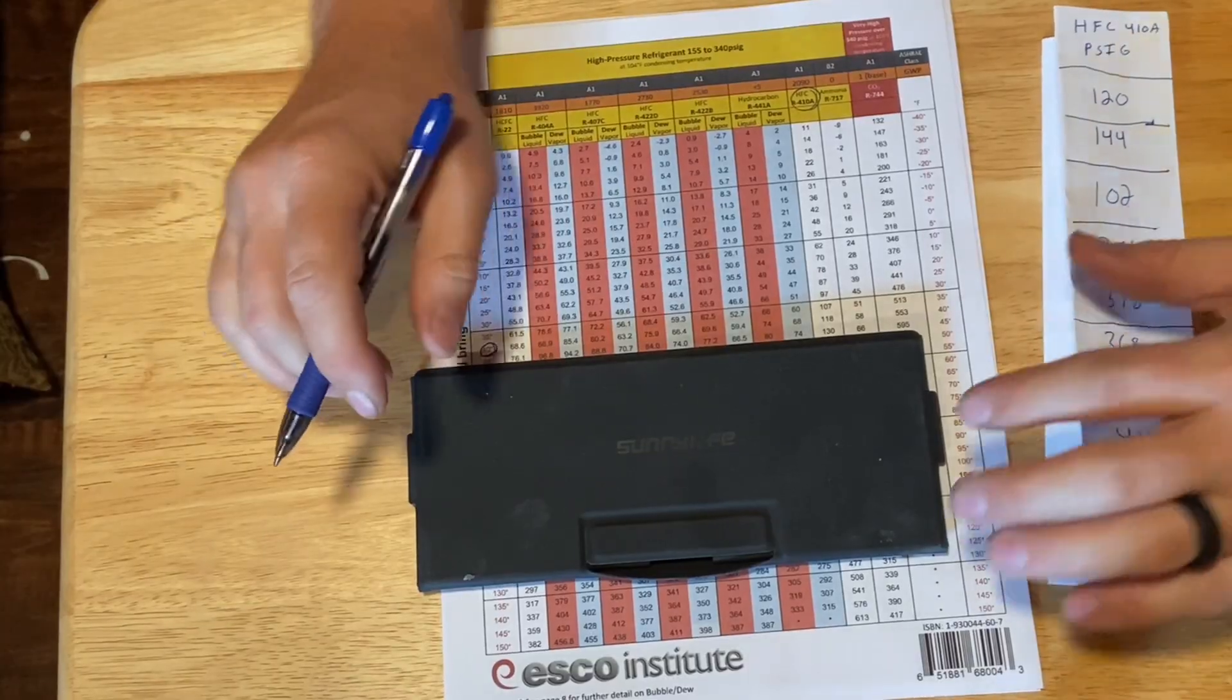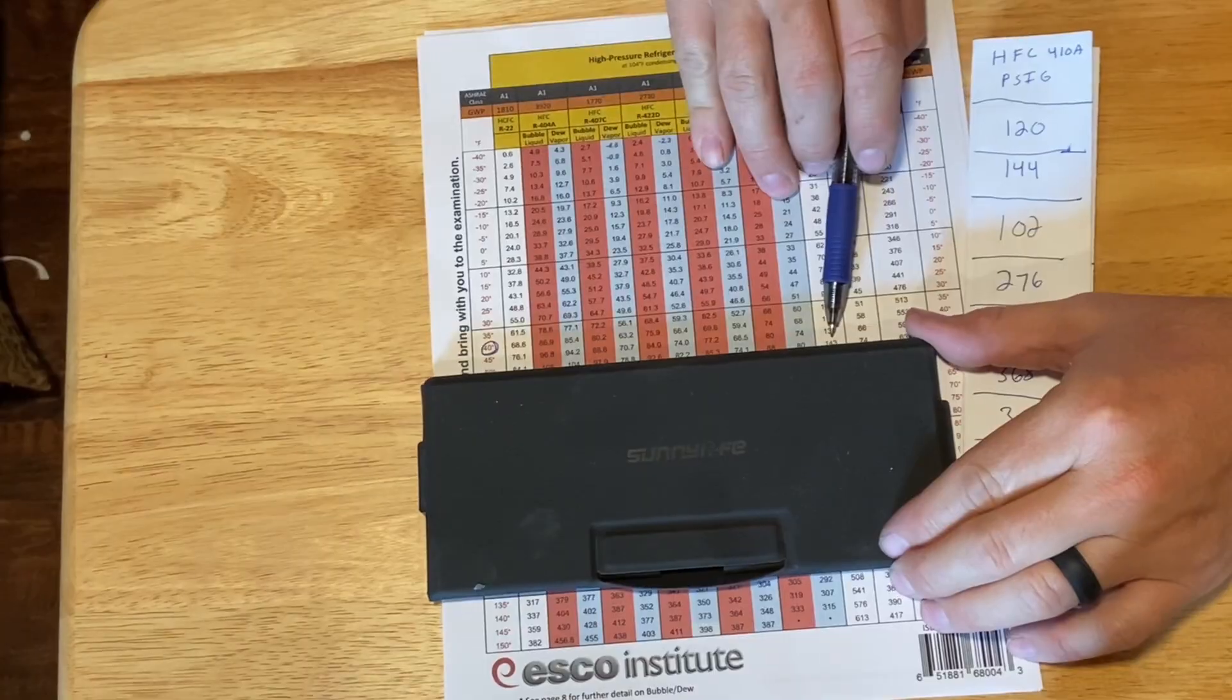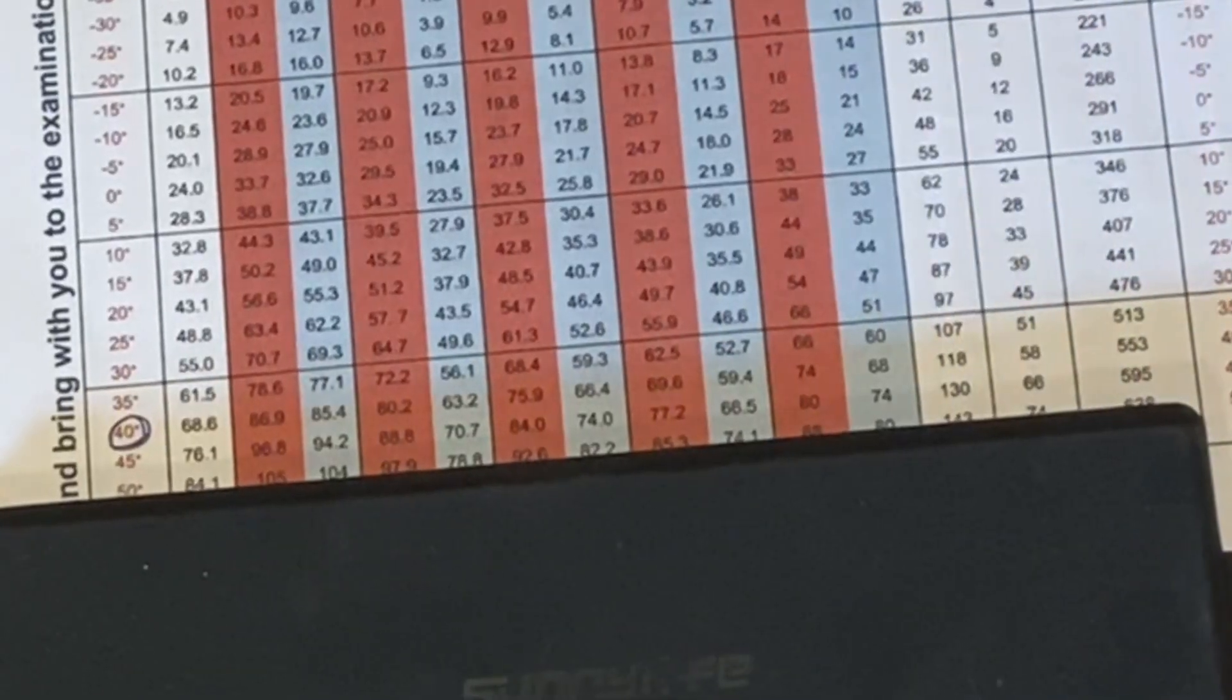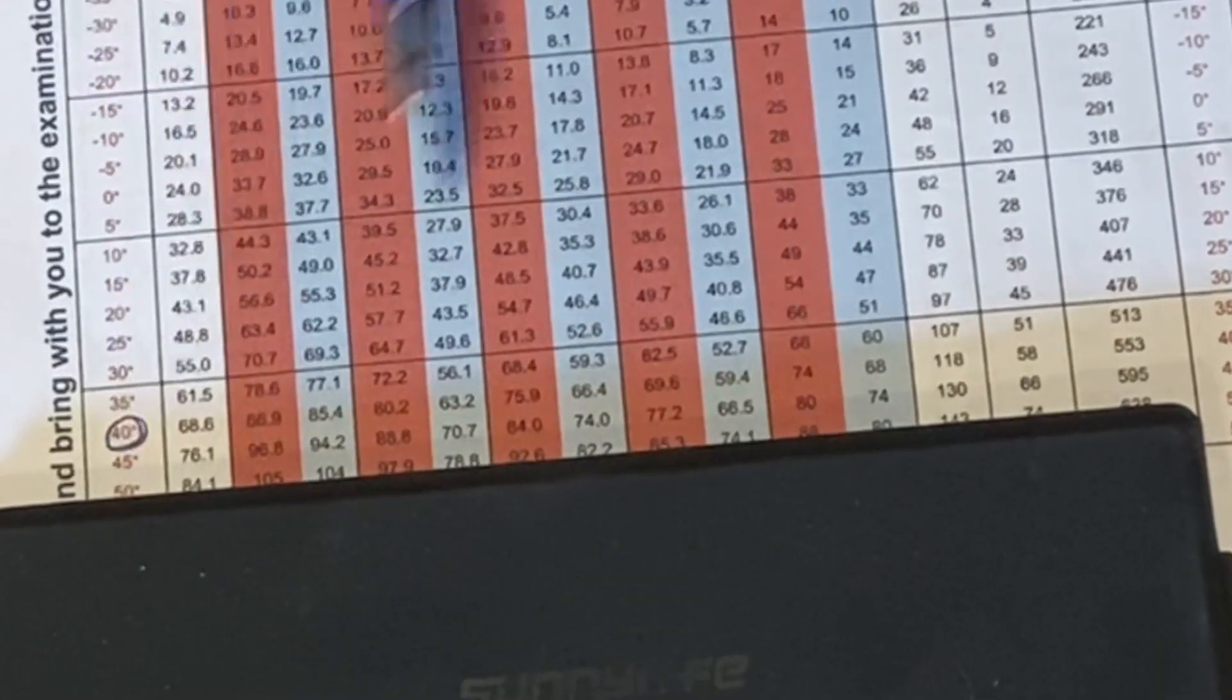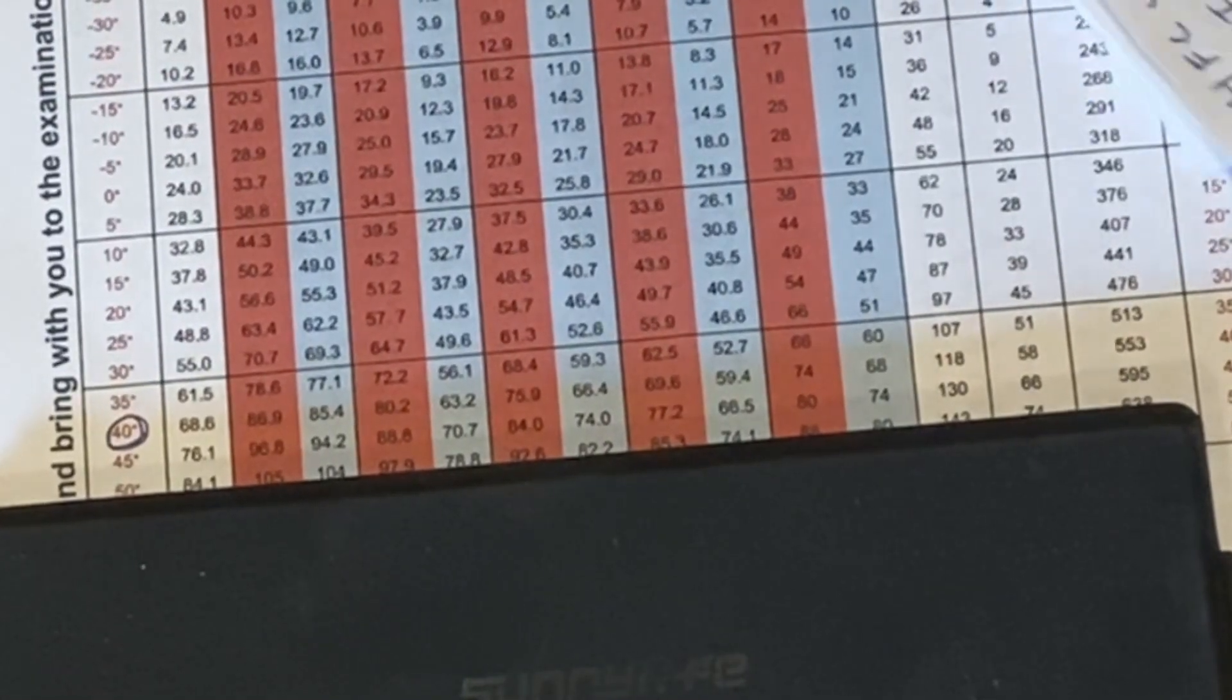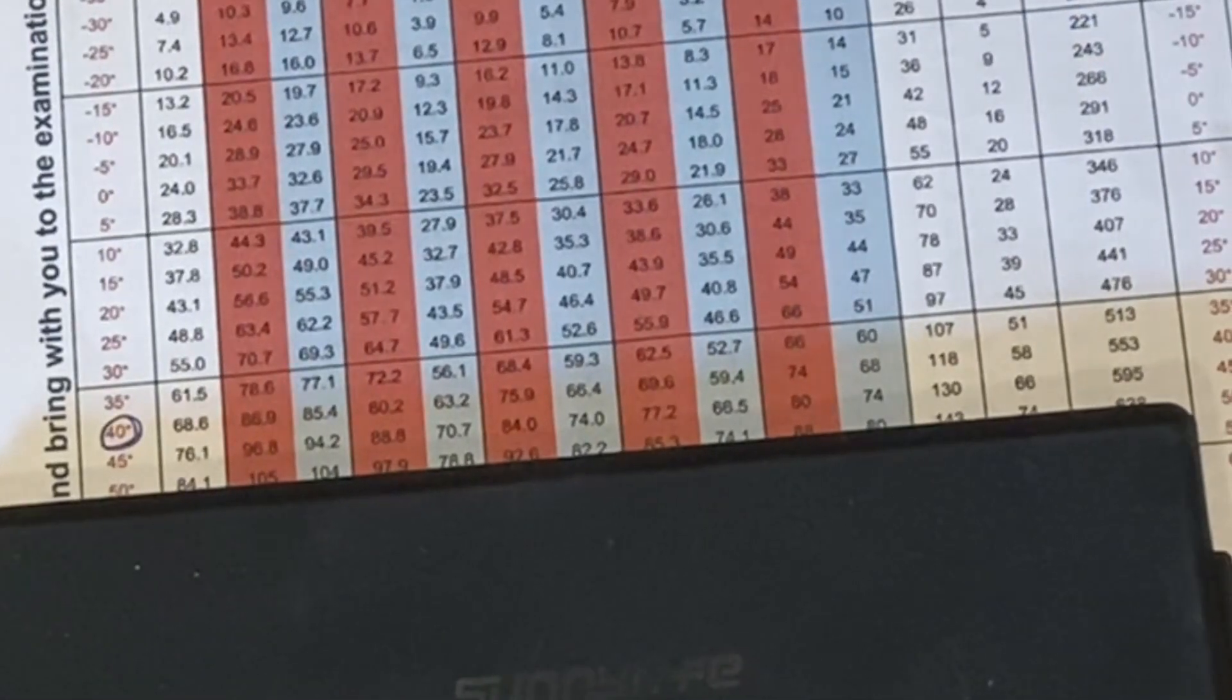Now let's take the next number. We have 144. So we're gonna drop down and find 144. So we have 143. So that's pretty close. 143 converts over to a saturated temperature of 50. So I'm gonna make a little note here. We're gonna write down 50.